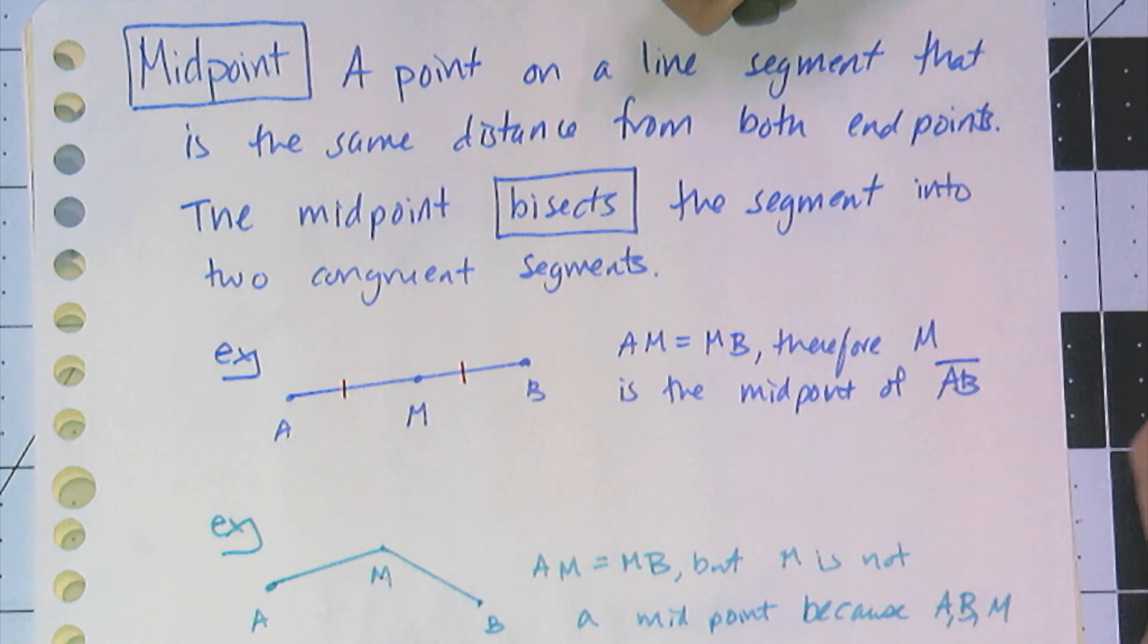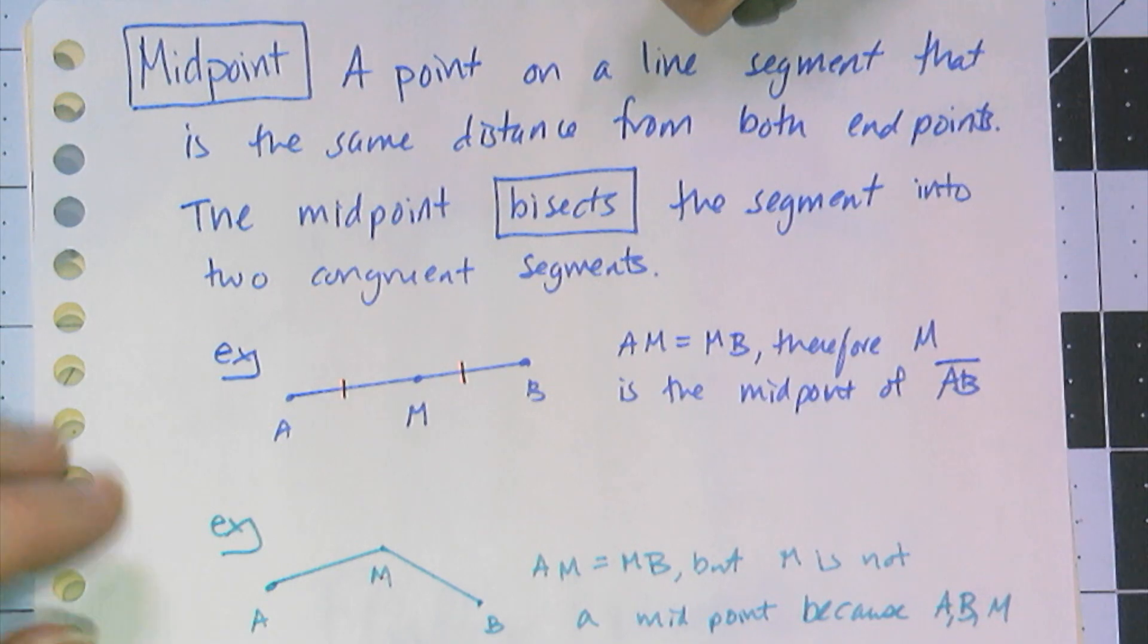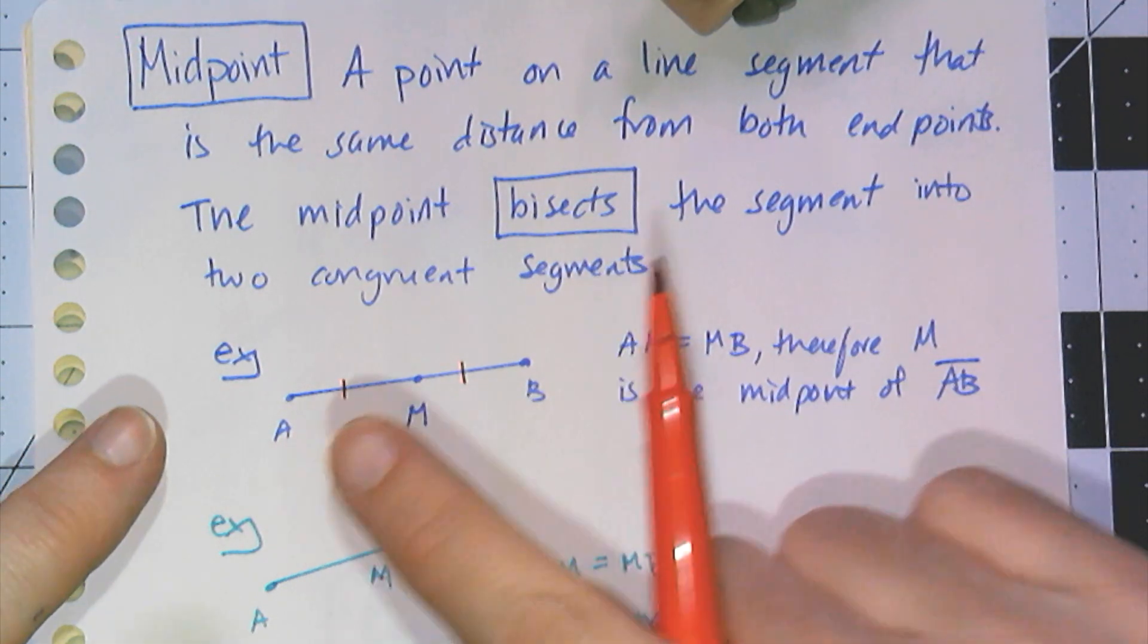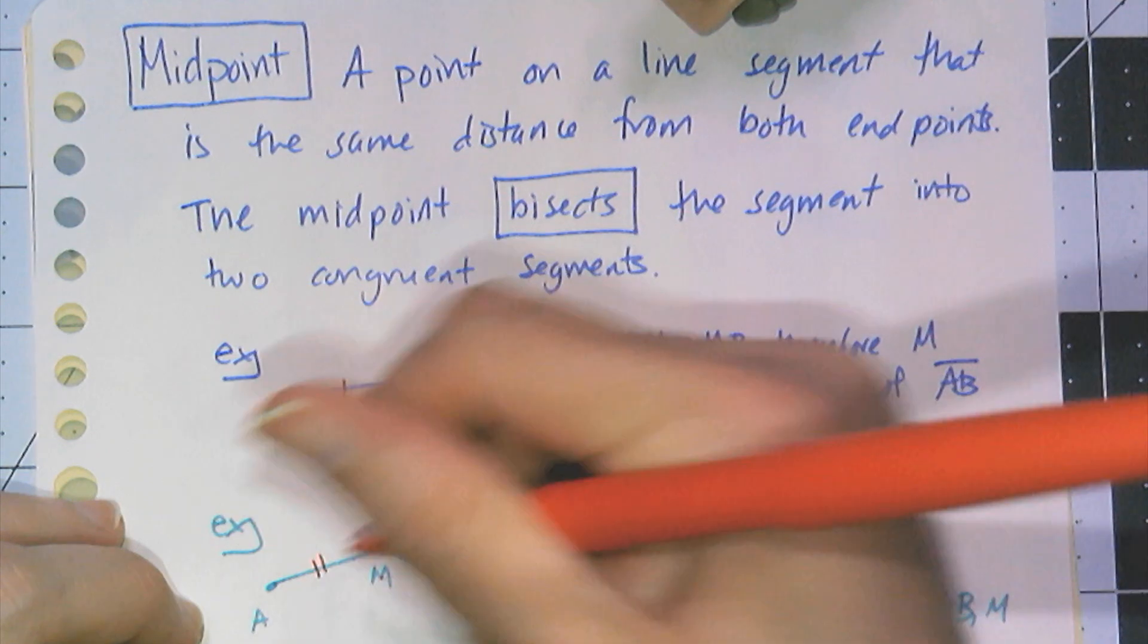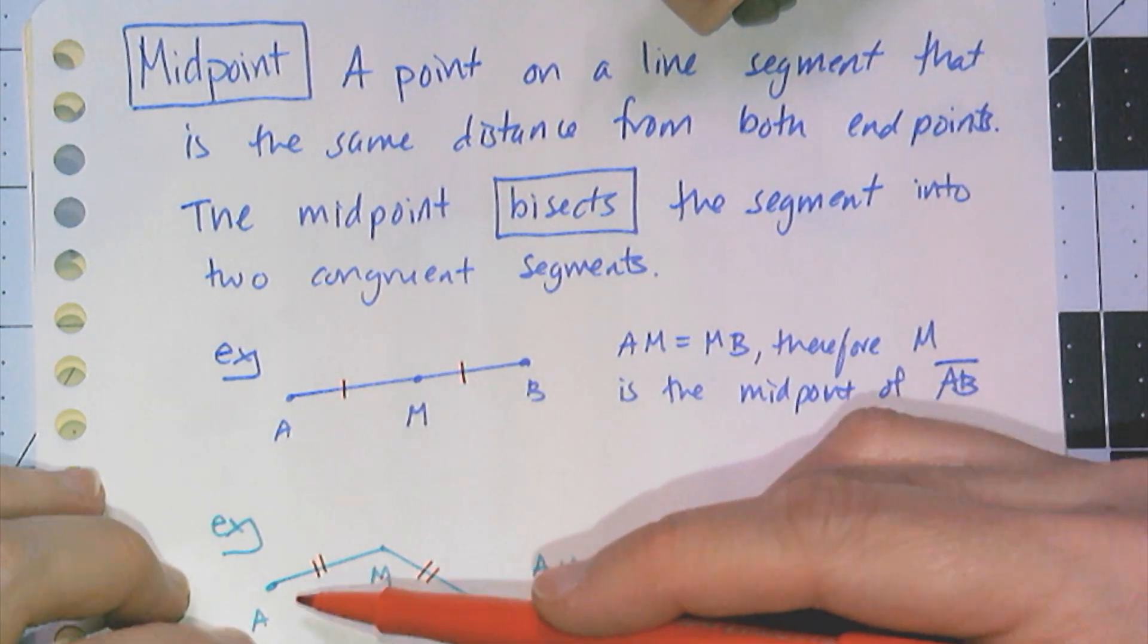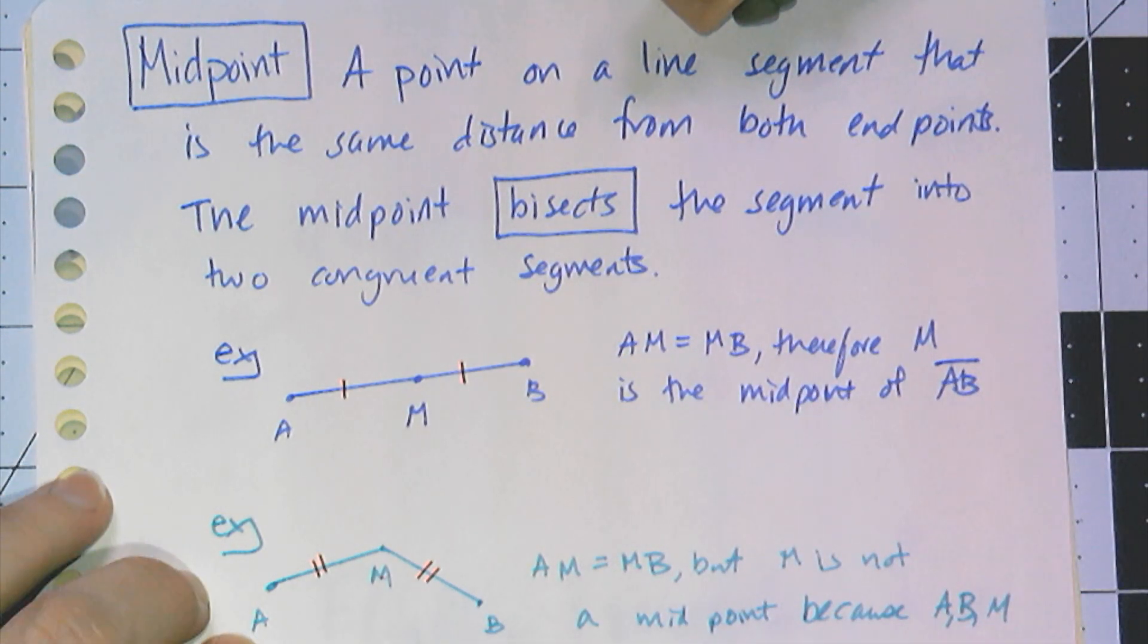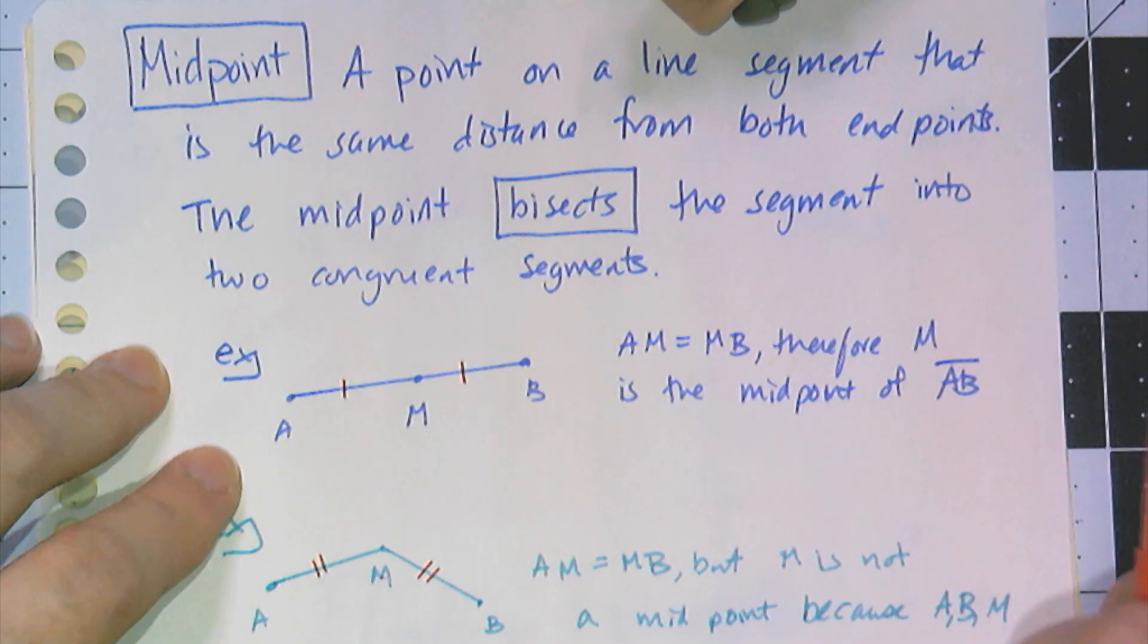If I have a more complex picture where maybe two things are congruent and another two things are congruent, I can change the number of tick marks to show that now these two are equal. This is really important when I have things like polygons or really complex webs of lines and line segments.